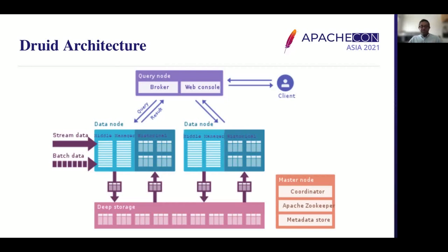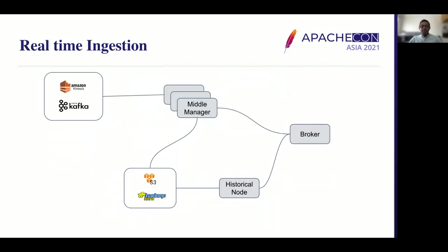The topic for this session is about the challenges and best practices on Druid real-time ingestion. Before we dive deep, we'll see how real-time ingestion works. The middle manager reads data from Kafka and stores it internally. After collecting sufficient data, it pushes the data from the middle manager to deep storage — which can be S3, HDFS, NFS, or similar. Once the data is moved there, the historical node picks the segment from deep storage and loads it locally.